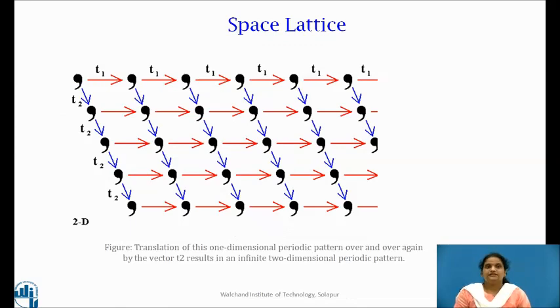Similarly, the repeated application of some other translations which are non-linear, that is not along the same line t2, to the above row generates a planar array of points which we call it as two-dimensional array of points.